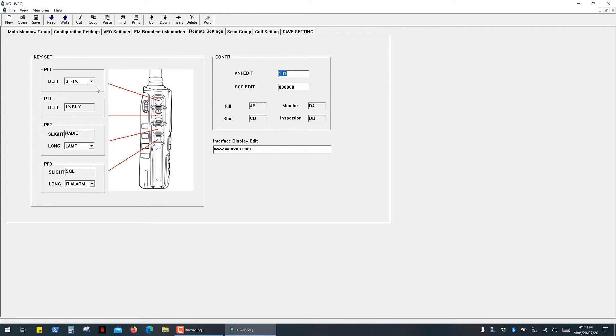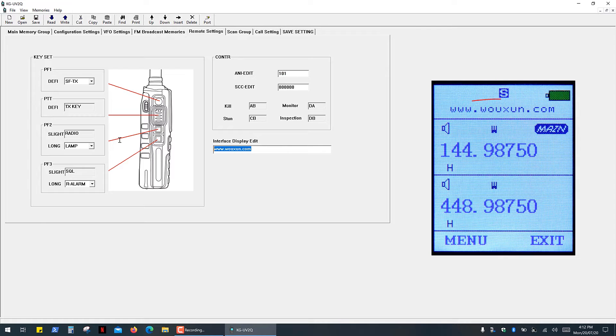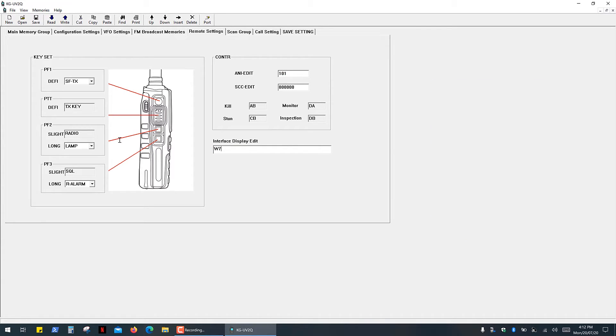In this tab you can reassign the side function buttons. And you can also remove this website from your radio screen. You can type your call sign here or whatever you want.